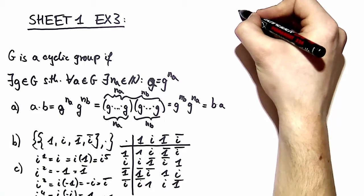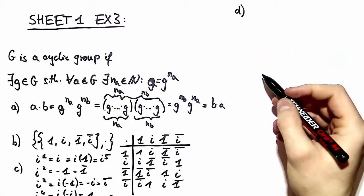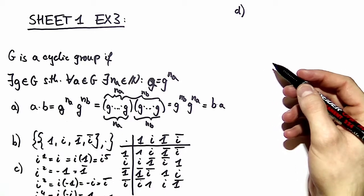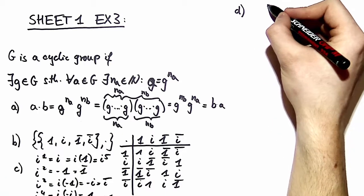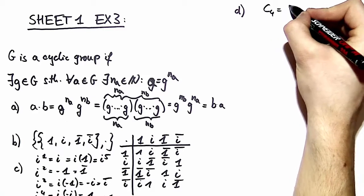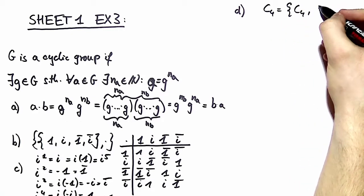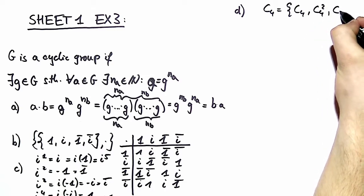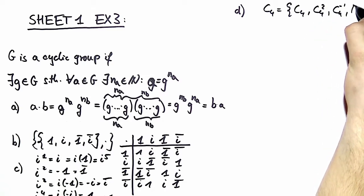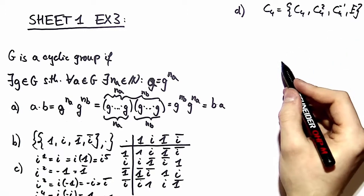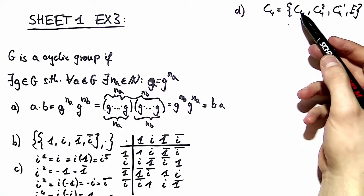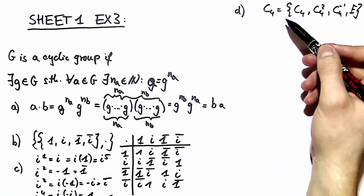In part D, we have to consider now a different group, namely C_4, which consists of all rotations by pi half, C_4 to the minus 1, and the identity.